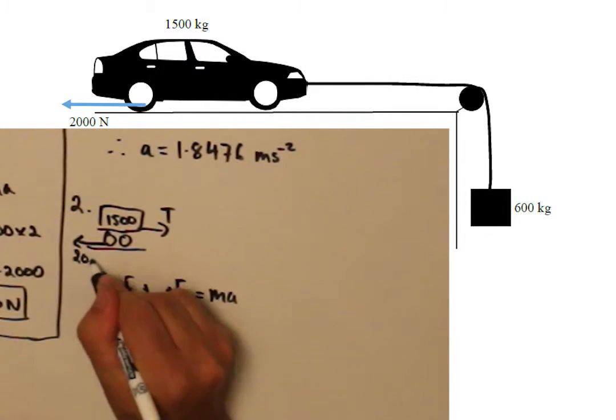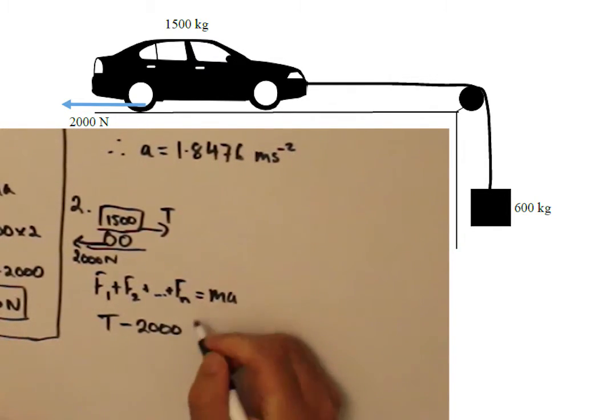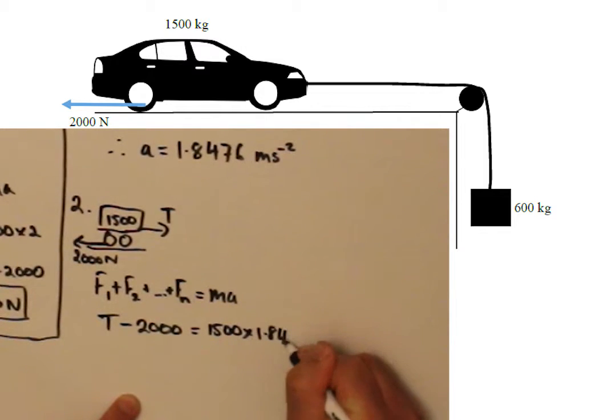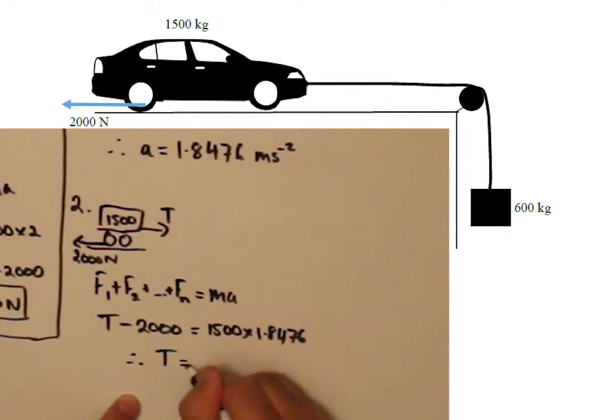And isolating the car gives us T minus 2000 equals 1500 times 1.85. We can solve for T, which leaves us with tension equals 4,701N.